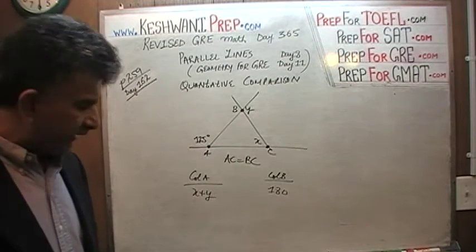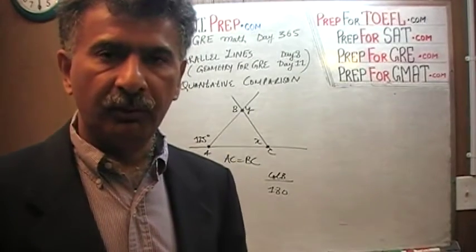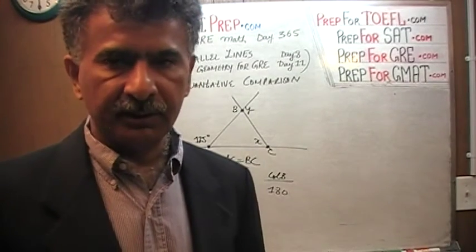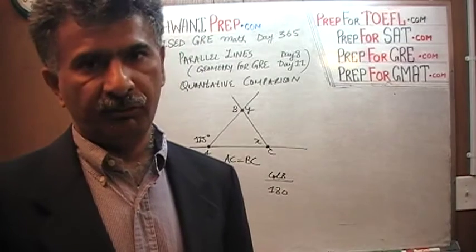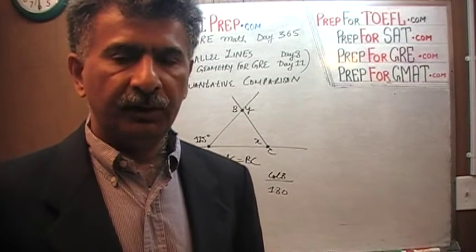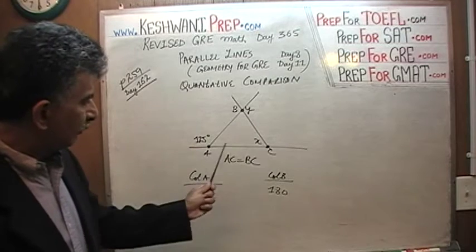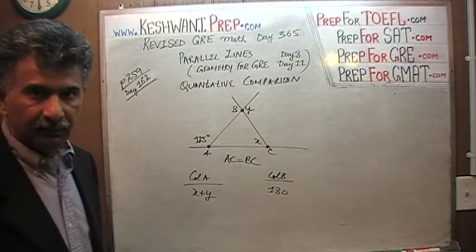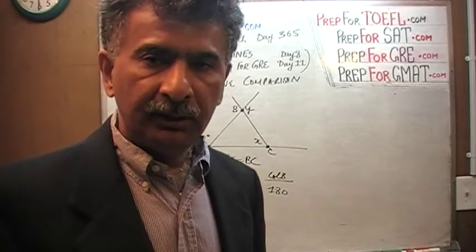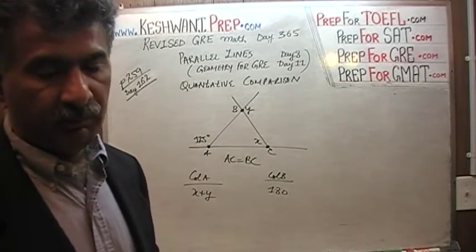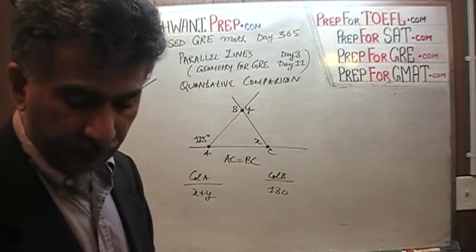The very first thing we have to understand is that all pictures on the GRE are not drawn to scale. We cannot look at pictures and assume that if two lines look equal, they are equal. Here, BC looks shorter than AC, but we are told AC equals BC. So the first thing to do is take a few extra seconds and redraw the picture — not based on what is shown, but based on what we are told. Let's reproduce our own triangle based on AC equals BC.